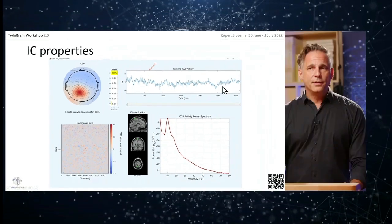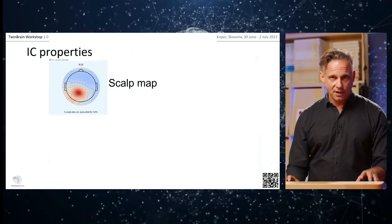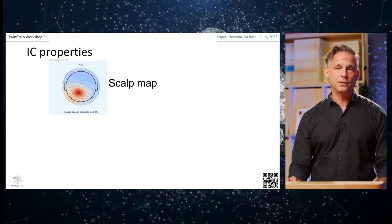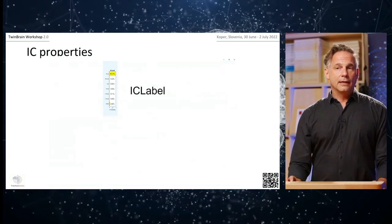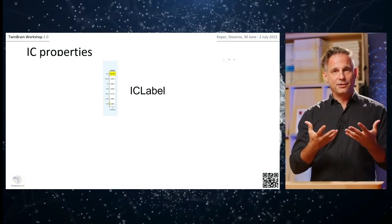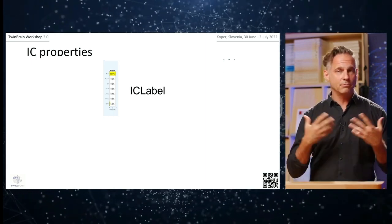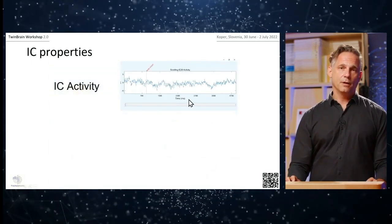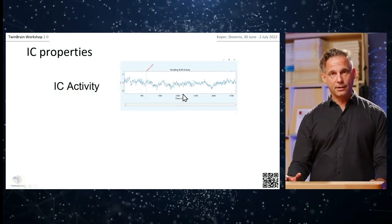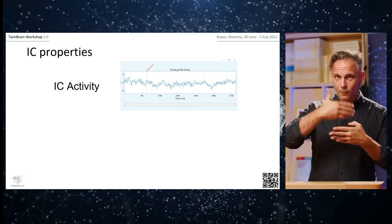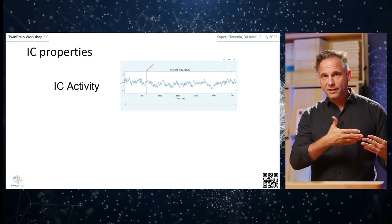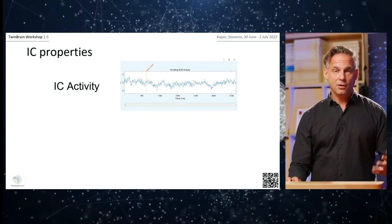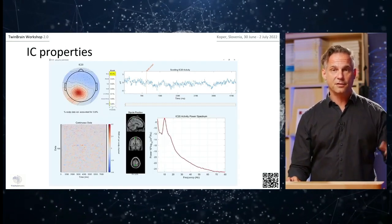I'll now dive into the different aspects: looking at the scalp map and what it tells you, then IC Label and its classification probabilities — brain, muscle, eye, line noise, and others. Then the time course, which is very informative because it's synced with your EEG sensor pattern, allowing you to compare it directly with your sensor data and see which IC contributes to which activity pattern.